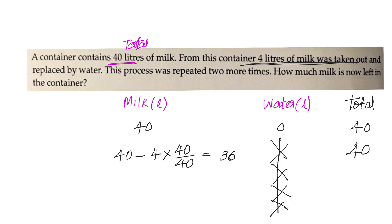Now we go to the second turn. After the first operation, out of 40 liters we have 36 liters of milk and 4 liters of water — that is 36, 4, and total 40. So the milk ratio is not 40 by 40 like before; now it is 36 by 40. That means we are diluting the milk.